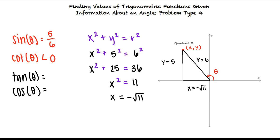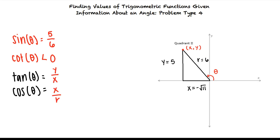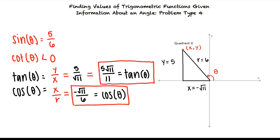Now that we know the sides of our triangle we can find the trig functions given in the problem. By the definition of trigonometric functions we know that tangent theta equals y over x and cosine theta equals x over r. We can substitute the values from our triangle into these equations and we see that tangent theta equals 5 square root 11 over 11 and cosine theta equals negative square root 11 over 6.